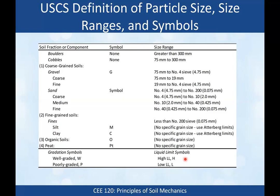For liquid limit symbols, a high liquid limit — greater than 50 — uses the symbol H, giving CH, MH, or OH. For Peat, we don't use any of these symbols; it's just PT. For a low liquid limit — below 50% — we use L, giving CL or ML. H is for high plasticity; L is for low plasticity.